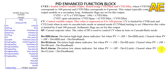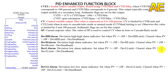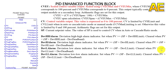The Deviation Low alarm indicator is set when PV is less than or equal to setpoint minus deviation low limit, and cleared when PV is greater than setpoint minus deviation low limit plus the deviation dead band. The Deviation Low Low alarm indicator is set when PV is less than or equal to setpoint minus deviation low low limit, and cleared when PV is greater than setpoint minus deviation low low limit plus the deviation dead band.